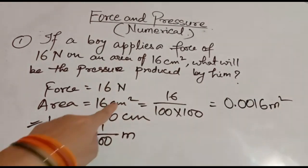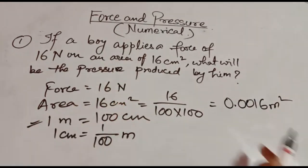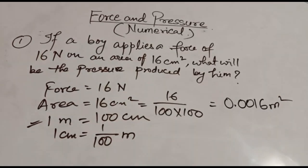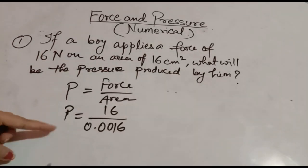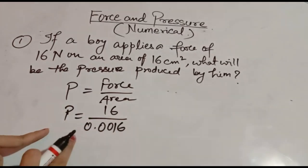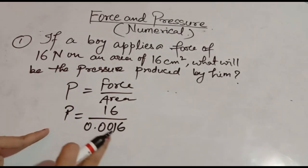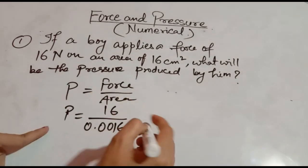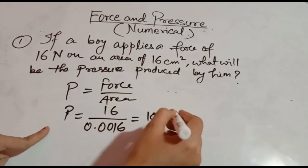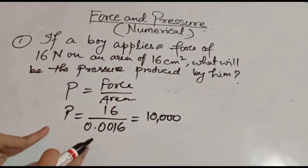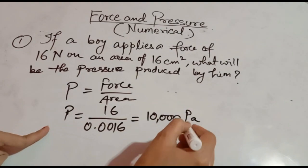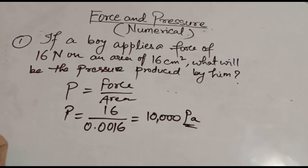Now the centimeter square is changed to meter square and you can use your formula. Pressure is equal to force by area. So pressure is equal to force value 16 divided by 0.0016. Simplify — it will be 10,000 Newton per meter square, which means Pascal. Directly write the unit Pascal: 10,000 Pascal.